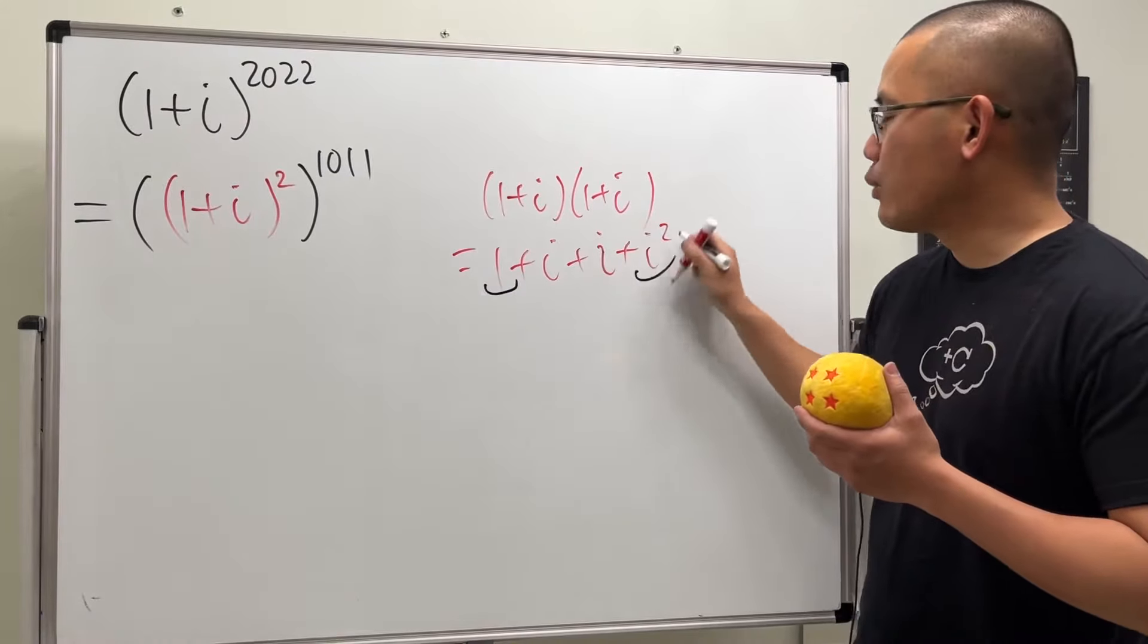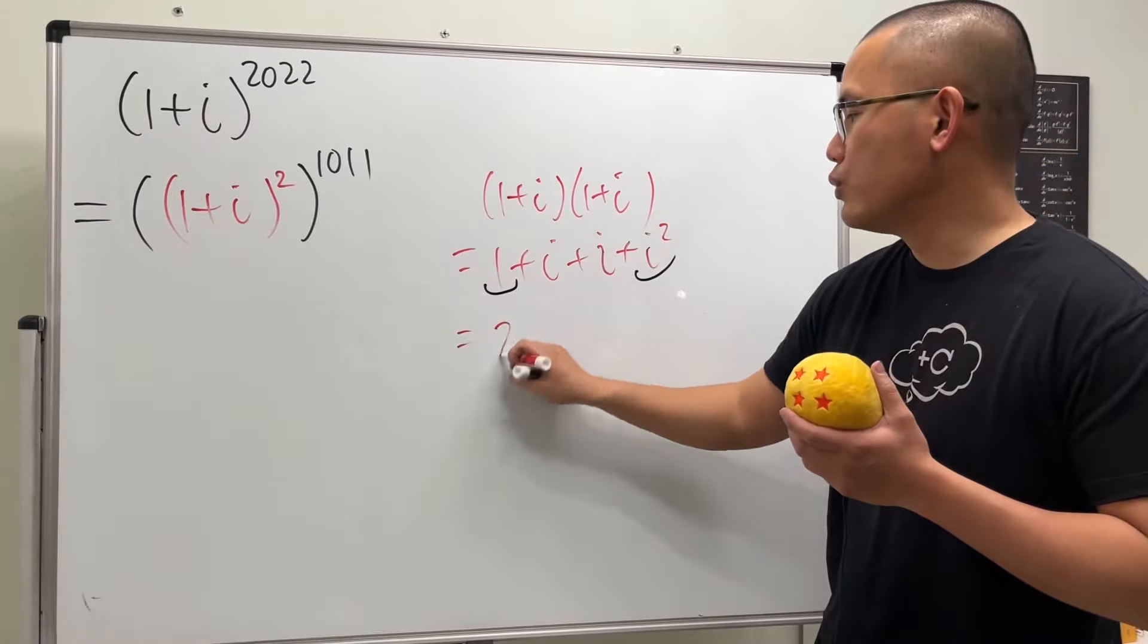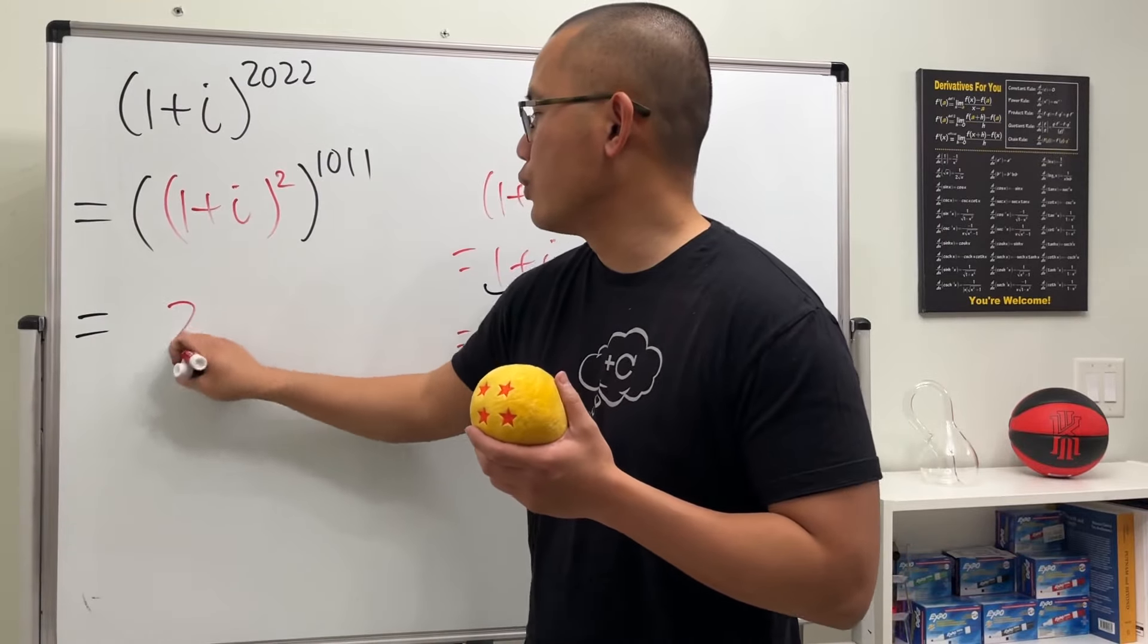So in fact, this right here and that right here will be just 0, so altogether we just get 2i. So in fact, the inside here is actually just equal to 2i.